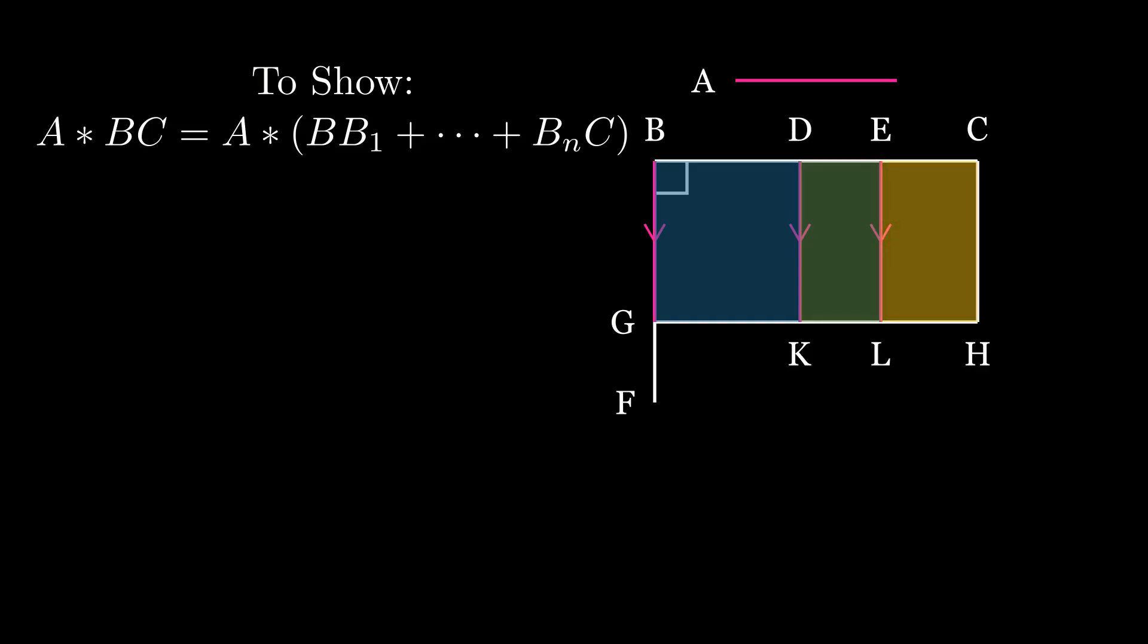Now we only cut BC in two places at random. It is clear to see that we can do this any number of times as we please.